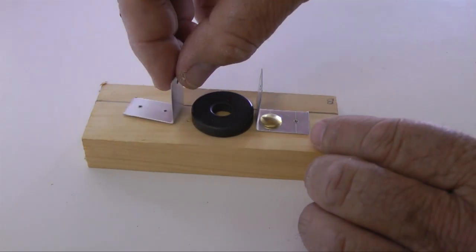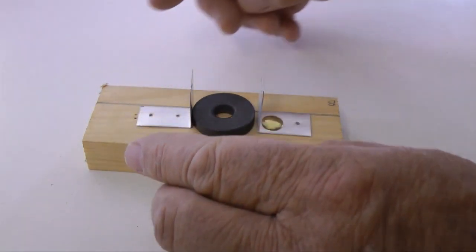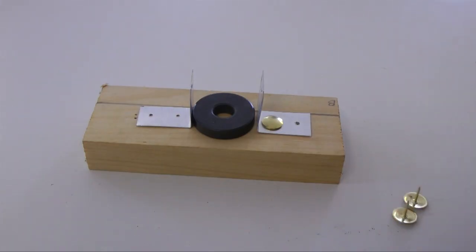Use thumbtacks to secure the brackets to the block. You may want to pre-punch holes in the bracket to make it easier to push the thumbtacks.